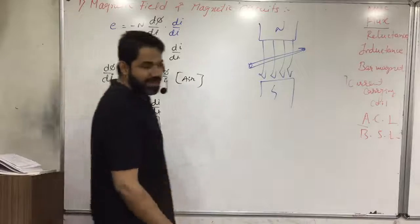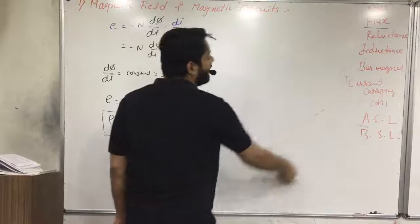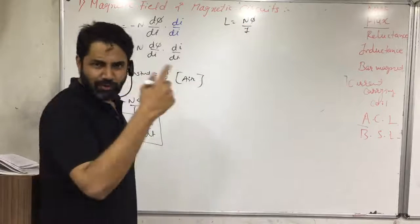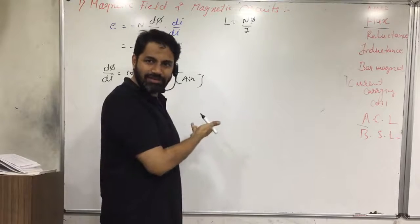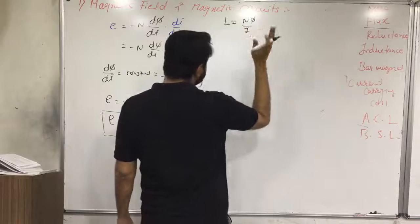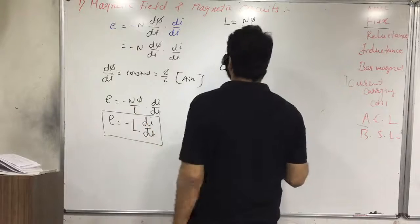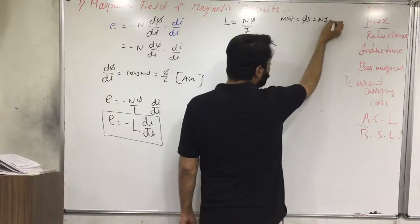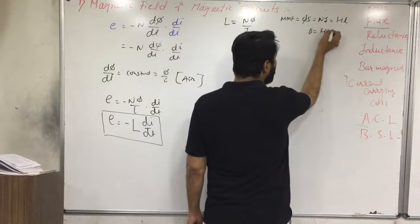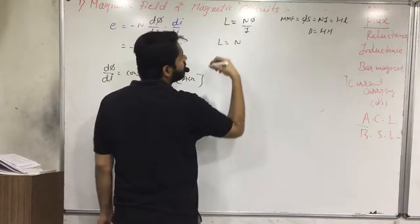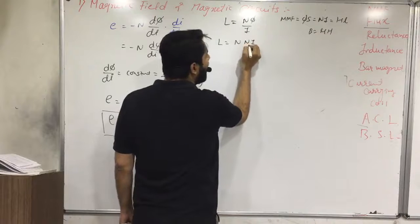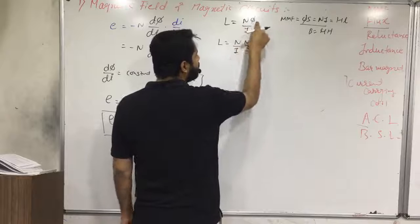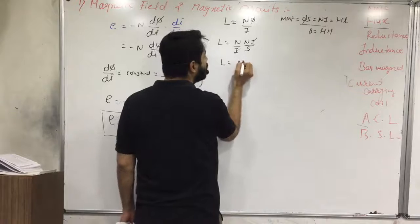That constant is called self inductance L. So L = Nφ/i. Now using the basic equation MMF = flux × reluctance, i.e., NI = φ × S, so φ = NI/S. Substituting: L = N × (NI/S) / I = N²/S.